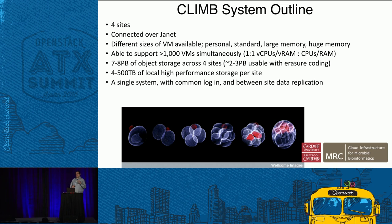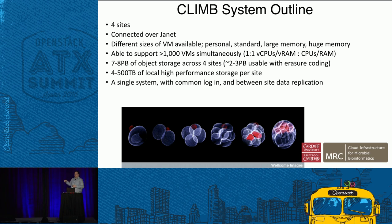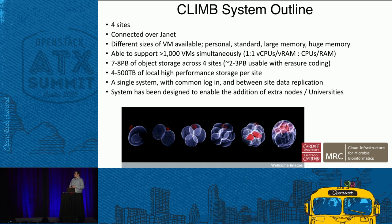We also have four to five hundred terabytes of local high-performance GPS storage per site for scratch space, mirroring databases, and spinning up VMs initially. Our vision is a single system with a common login using federated credentials to enable anybody with a .ac.uk email address to log in. The special sauce is between-site data replication: if we lose one site you can still access your files. Several universities in the group have had data center downtime — including three weeks of maintenance at Cardiff just before Christmas when the whole data center was shut down to replace power systems. By having four sites we get resilience.